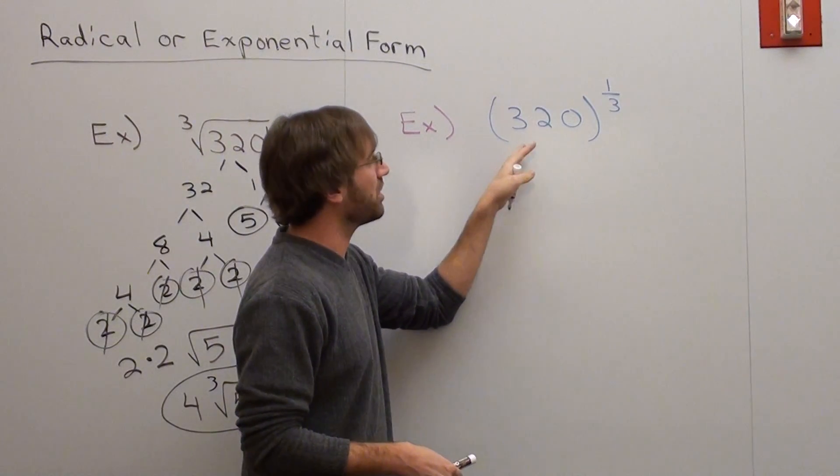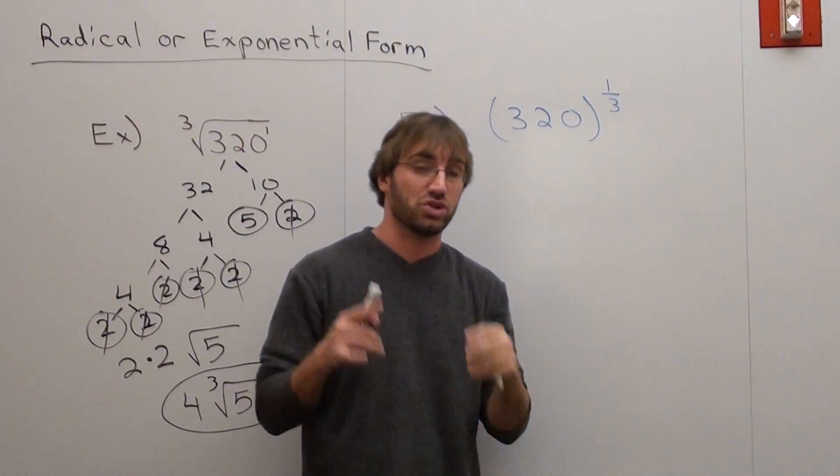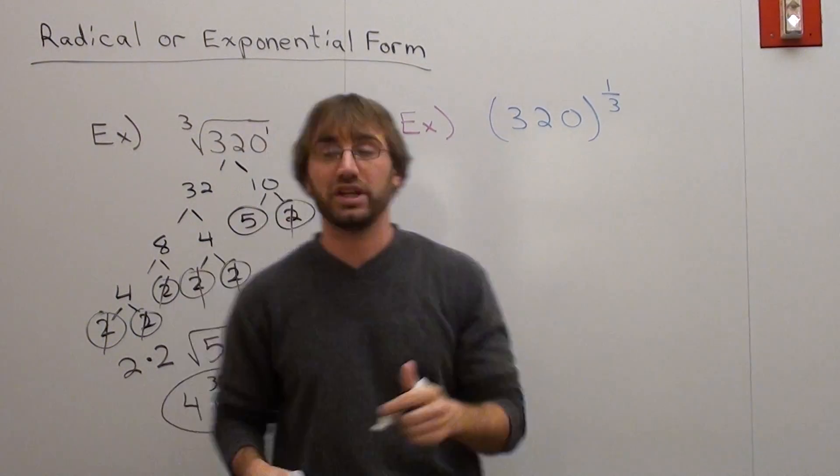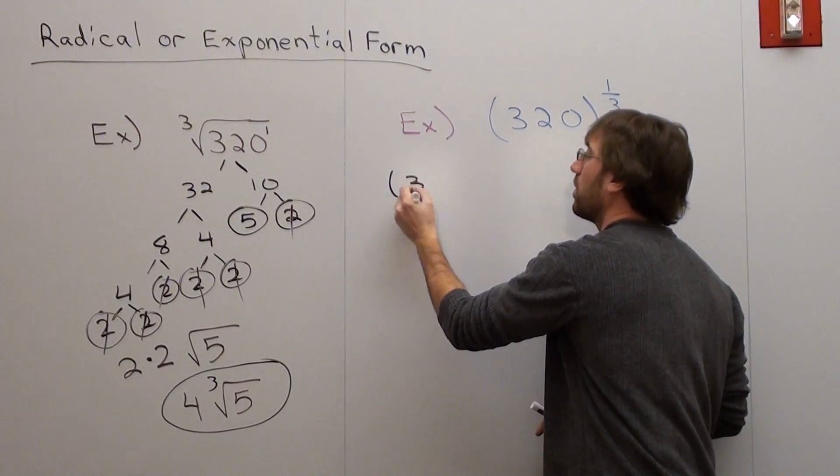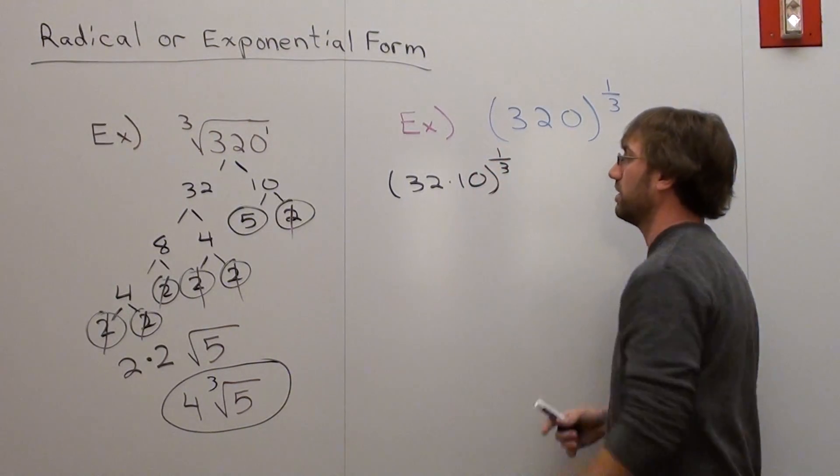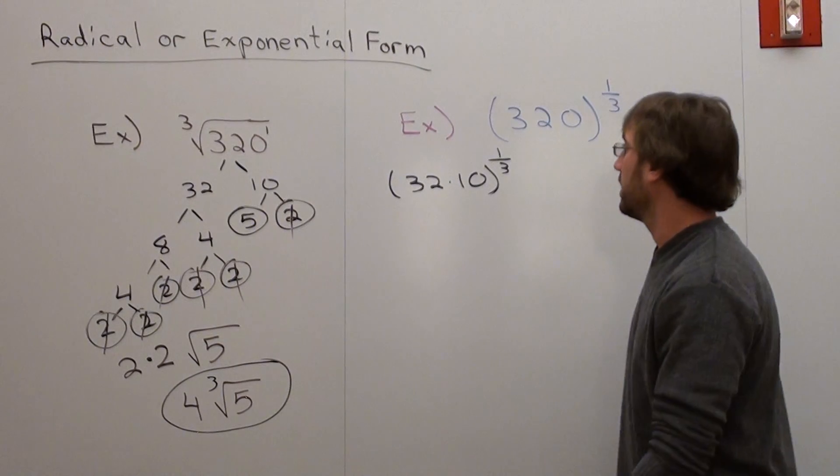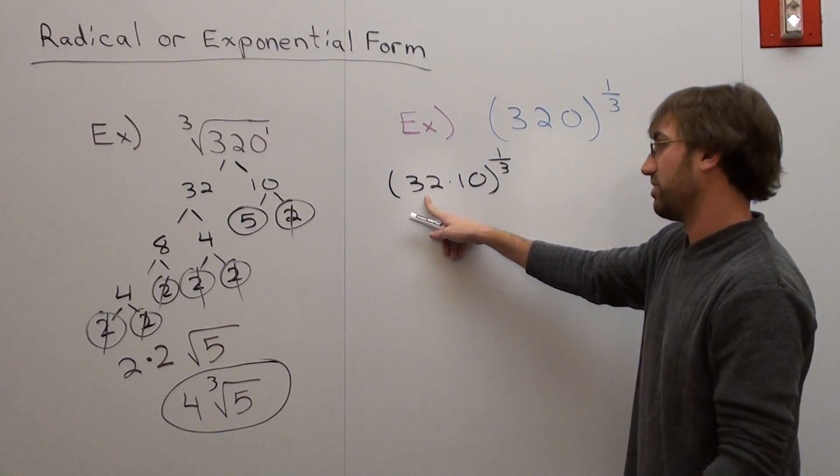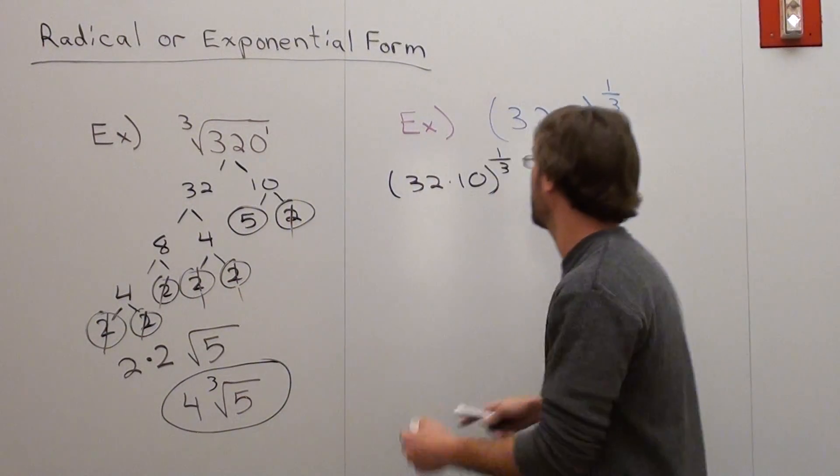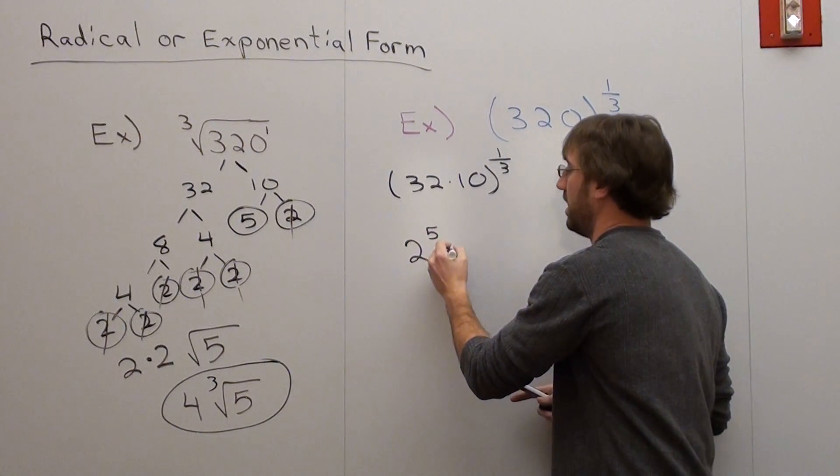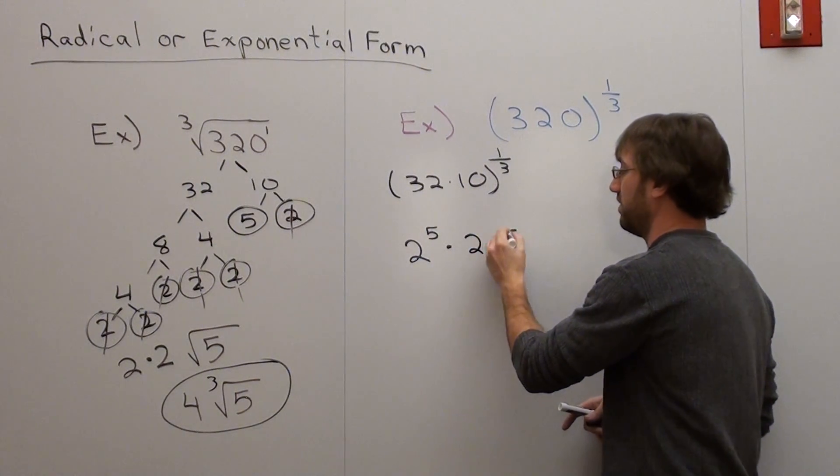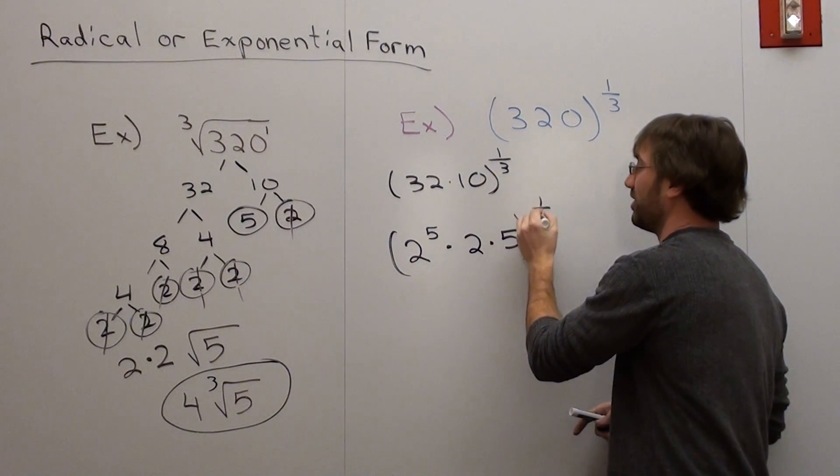So if we go ahead and look at this one, 320 to the one-third power, what we're going to do is do it the same way except something slightly different here. We're going to split 320 into 32 times 10 to the one-third. And then I'm going to see if I can split 32. And the answer was yes I could. It's 2, 2, 2, 2, and 2. So it was 2 to the fifth times, and 10 was 5 times 2, which is 2 times 5.